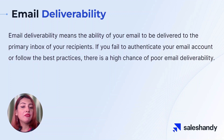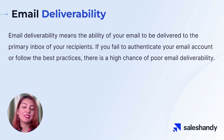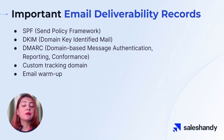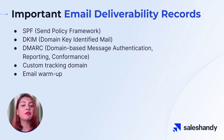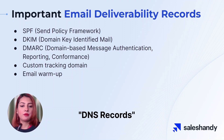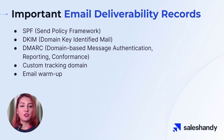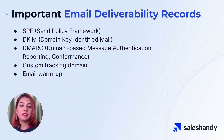Even if you have an old email account, your email deliverability can still suffer — we will explore more on that in lesson three. Now let's look at the most important email deliverability records. SPF, DKIM, and DMARC are three DNS records created to boost your email security. Custom tracking domain and email warmup are also ways to make your email deliverability better.